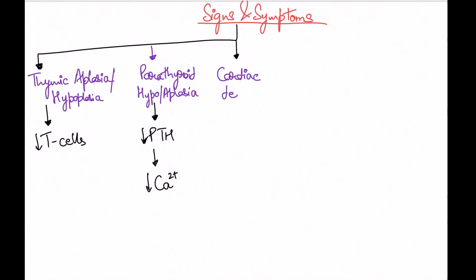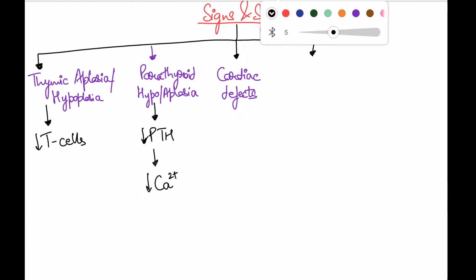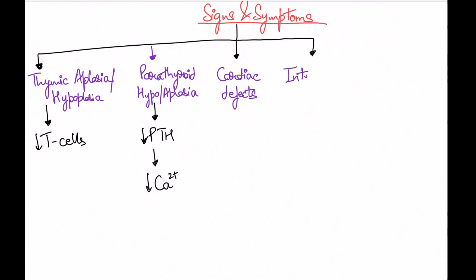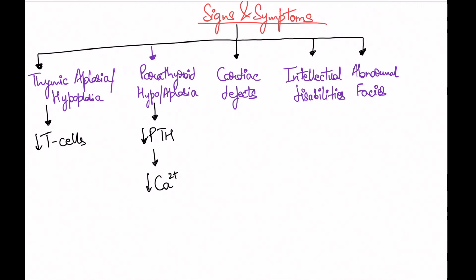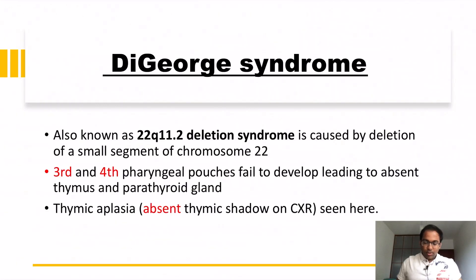The third feature to remember is cardiac defects, including tetralogy of Fallot and conotruncal abnormalities, among others. The fourth is intellectual disability. The fifth is abnormal facies — the child may have a broad nose, low-set ears, and other abnormal features. The last one to remember is autoimmune disease, such as rheumatoid arthritis.